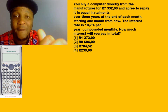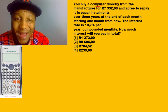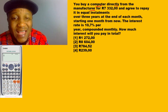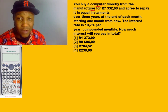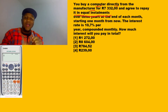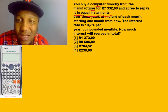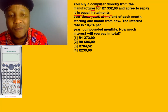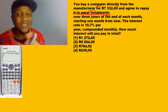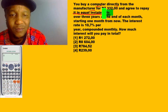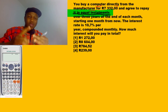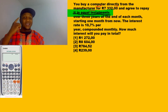So let's say you buy a computer direct from the manufacturer — where they manufacture the computer — but you agree to repay in equal installments. I'm going to highlight this. Whenever they mention equal payment, equal deposit, or equal withdrawal — whether you withdraw or deposit — keep in mind the formula we're going to use.